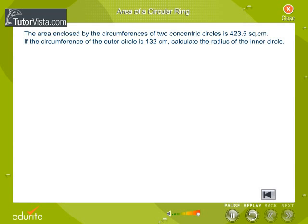The area enclosed by the circumferences of two concentric circles is 423.5 square centimeters. If the circumference of the outer circle is 132 centimeters, calculate the radius of the inner circle.